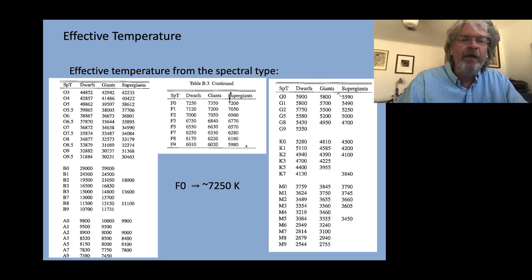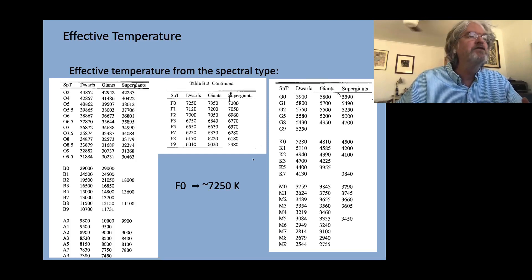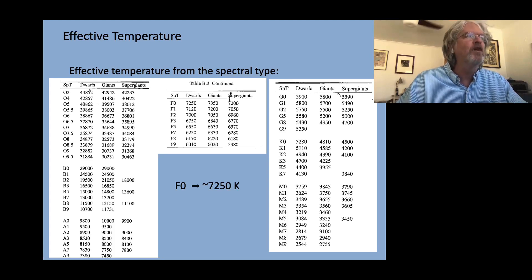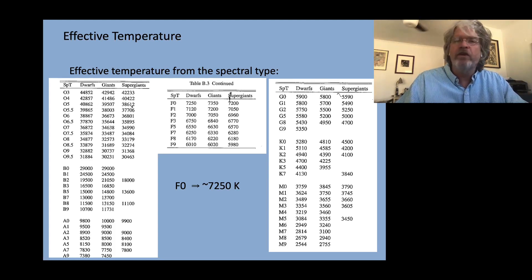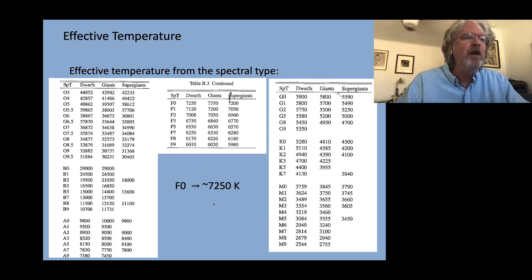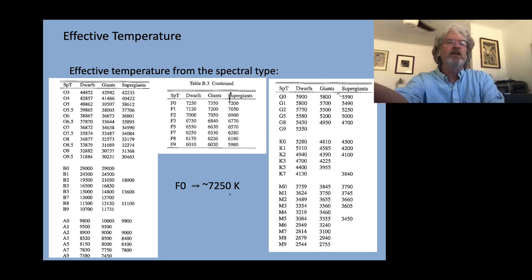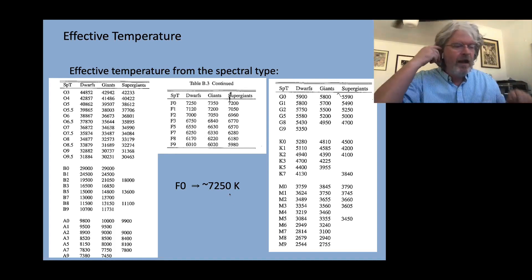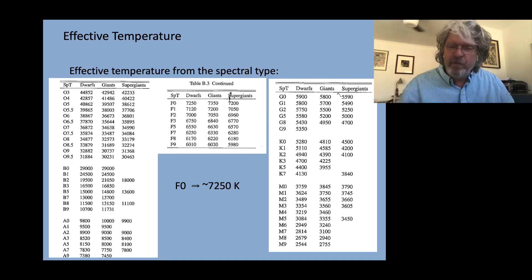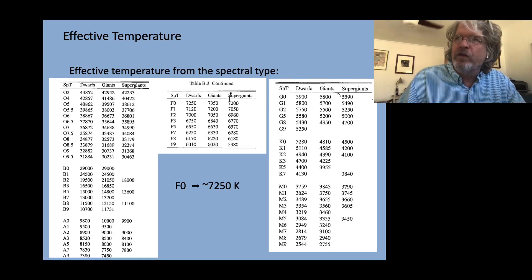I go to this table of effective temperature for the different spectral types. You've got the spectral types and their corresponding effective temperatures, and notice it depends on whether you're looking at a giant, a dwarf, or a supergiant. This star is an F0 main sequence star — it's an F0 dwarf. So I might expect a temperature of about 7250 Kelvin based on its spectral type. That would be the effective temperature of the atmosphere — that characteristic temperature of the star.